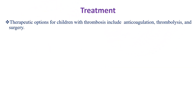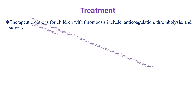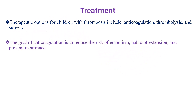Regarding treatment, therapeutic options for children with thrombosis include anticoagulation, thrombolysis, and surgery. Anticoagulation prevents the formation of new thrombus, whereas thrombolysis causes breakdown of already-formed thrombus. The goal of anticoagulation is to reduce the risk of embolism, halt clot extension, and prevent recurrence.